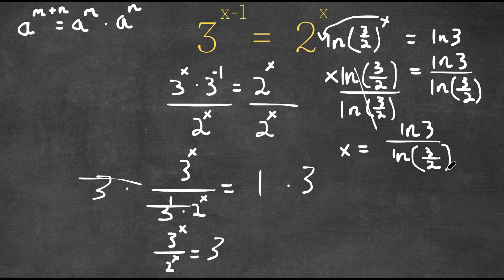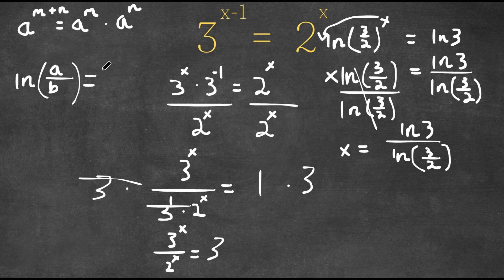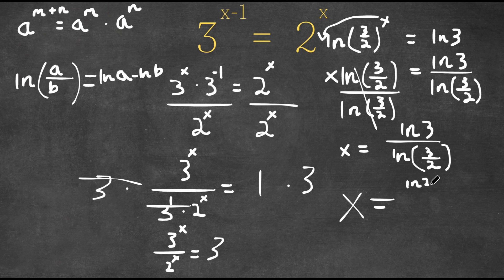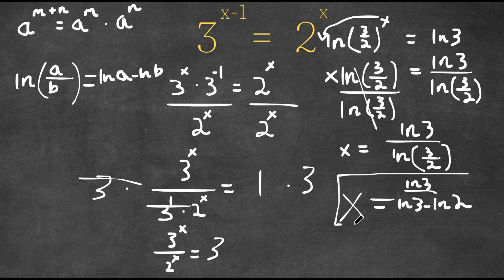Although this is a fine answer, it can actually be simplified. Because ln(a/b) is equal to ln a minus ln b, we can expand ln(3/2) as ln 3 minus ln 2. So our final answer is x is equal to ln 3 over ln 3 minus ln 2.